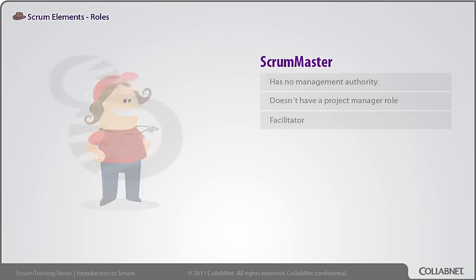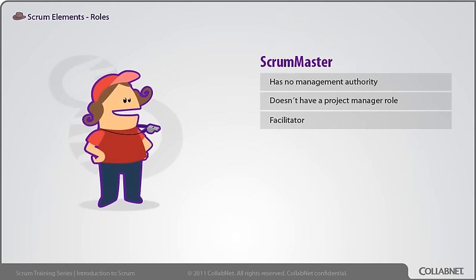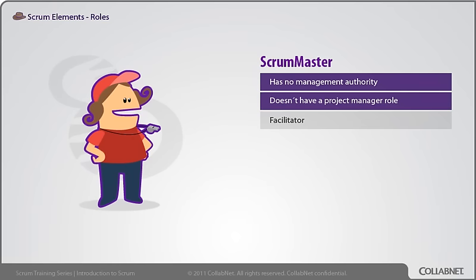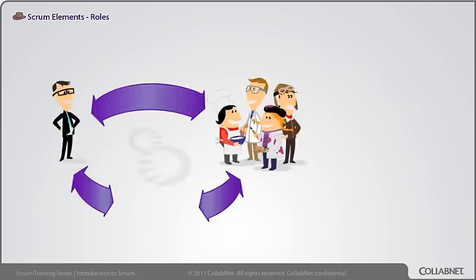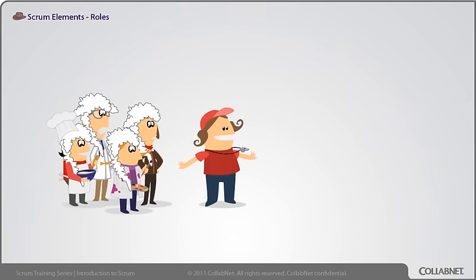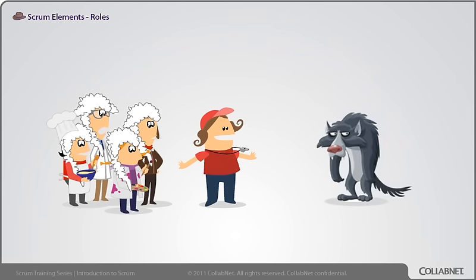The Scrum Master is the most misunderstood role in Scrum. The Scrum Master has no management authority over the team. If you're the project manager or line manager of the team, by definition you are not the Scrum Master. Scrum intentionally leaves out the project manager role — those responsibilities are split among the product owner and the team, with the Scrum Master acting as a facilitator. The Scrum Master protects the team from distractions, removes impediments, facilitates the process, teaches people how to use Scrum, promotes improved engineering practices, enforces time boxes, and provides visibility — all without any management power.